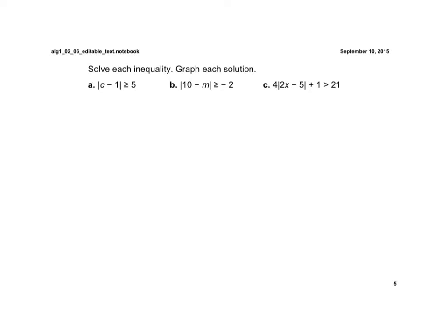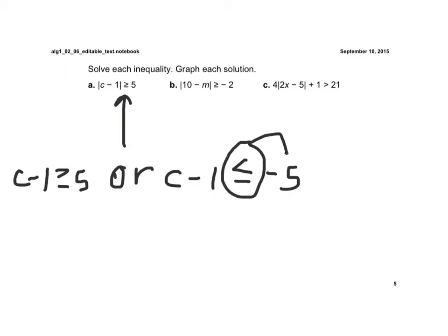Now we're looking at ones that are greater than. When we have greater than or equal to, we use the word 'or' between them. So I set it up: c minus 1 is greater than or equal to 5, or c minus 1 is less than or equal to negative 5. Notice I always flip and change the sign of the number. Now I solve by adding 1: c is greater than or equal to 6.